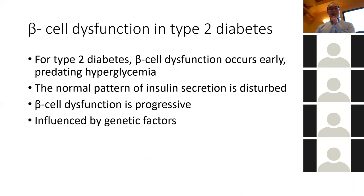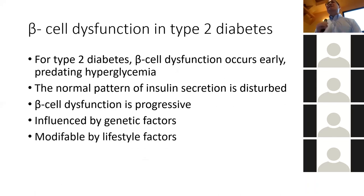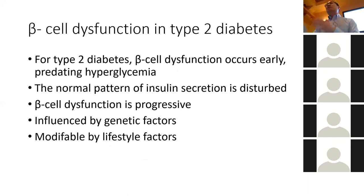There is a big genetic factor in type 2 diabetes. If your parents have diabetes, it's often passed on to kids, so they need to know about it. Unlike type 1 diabetes where there's really nothing you can do to prevent it, with type 2 there's lots you can do: diet, lifestyle, exercise, losing weight, and starting metformin. All of those things can prevent the progression from pre-diabetes to full-blown diabetes.